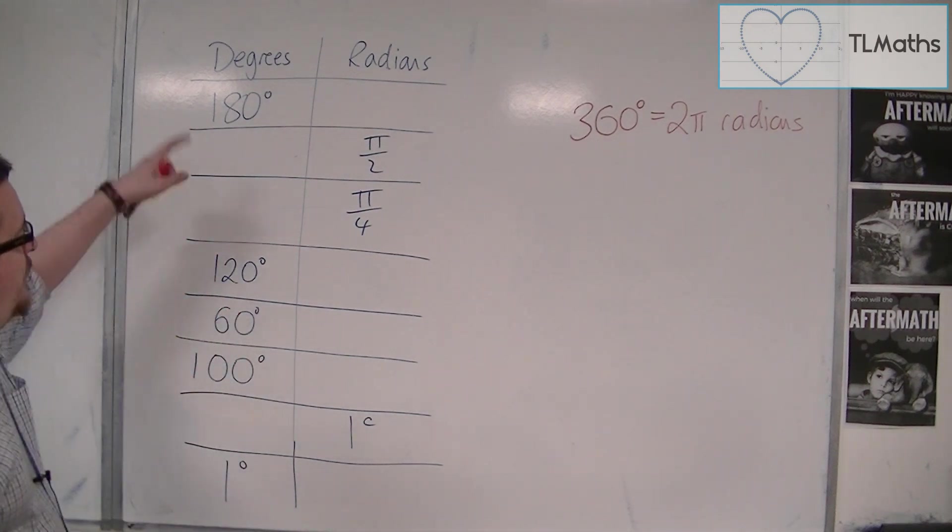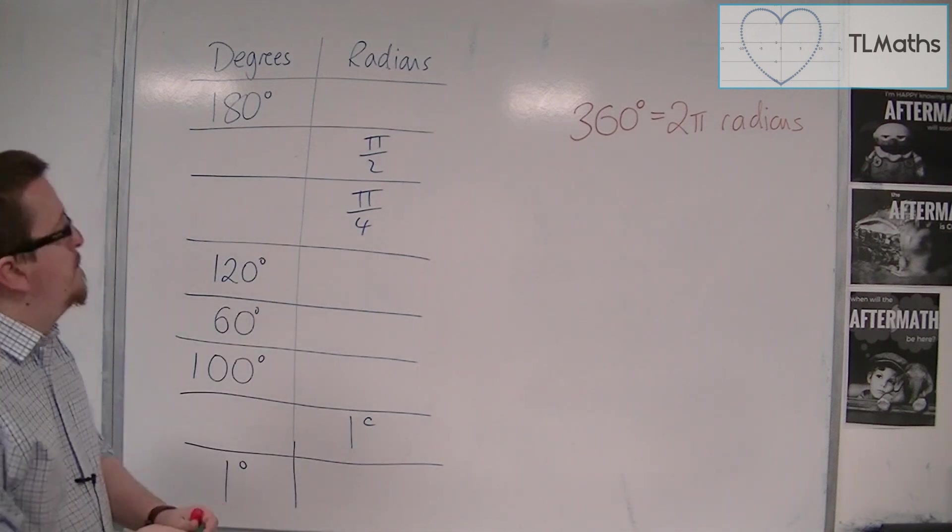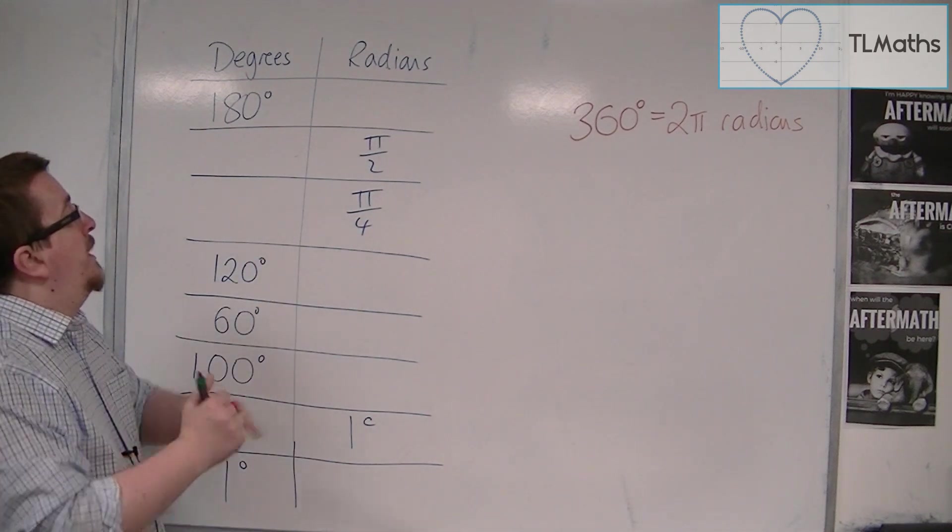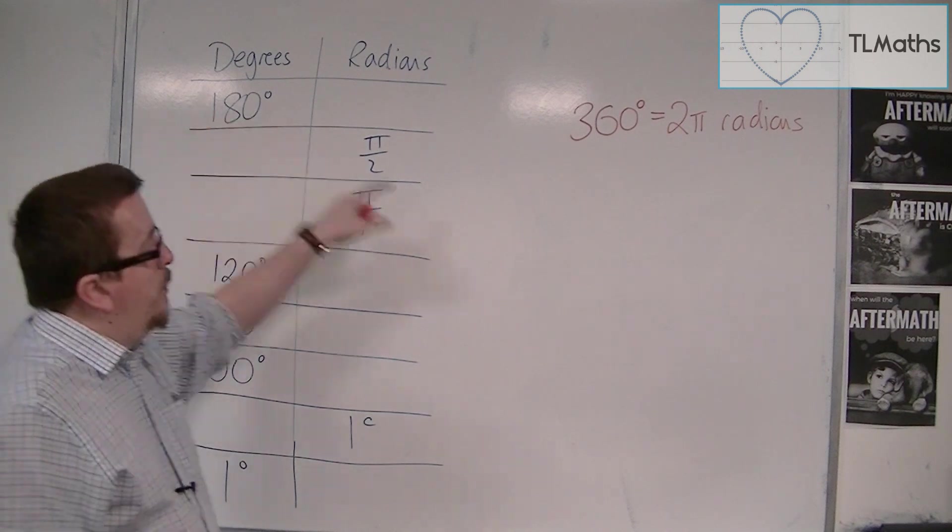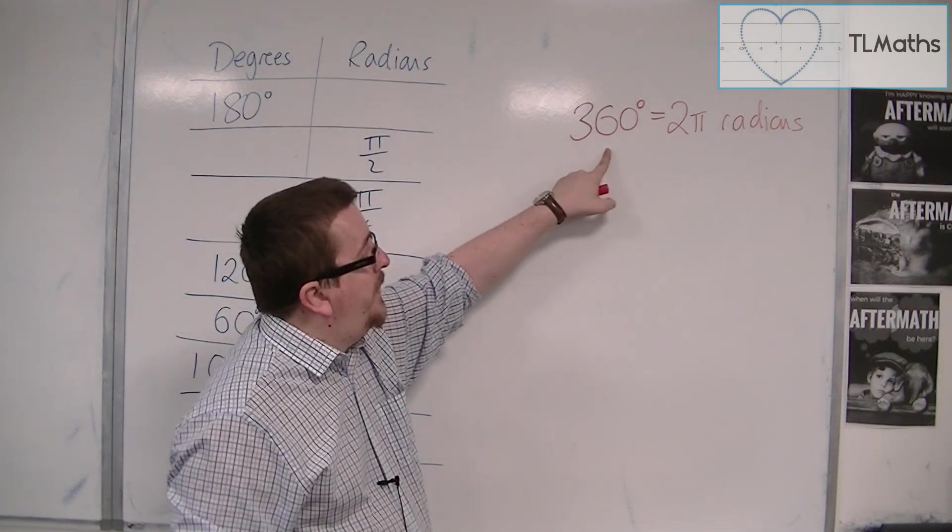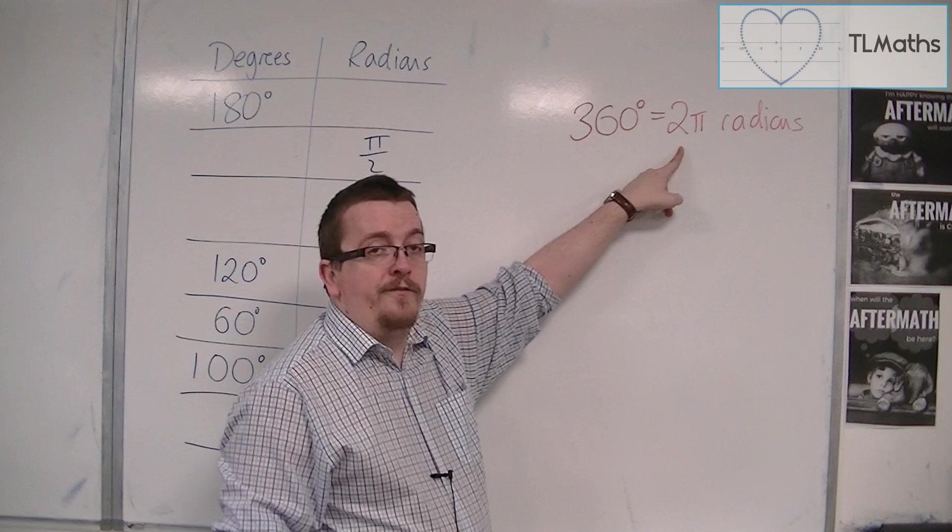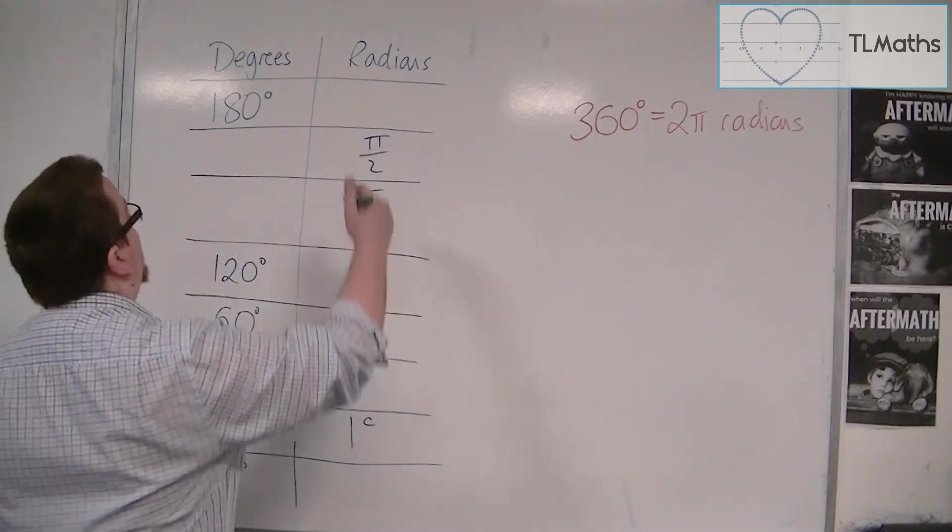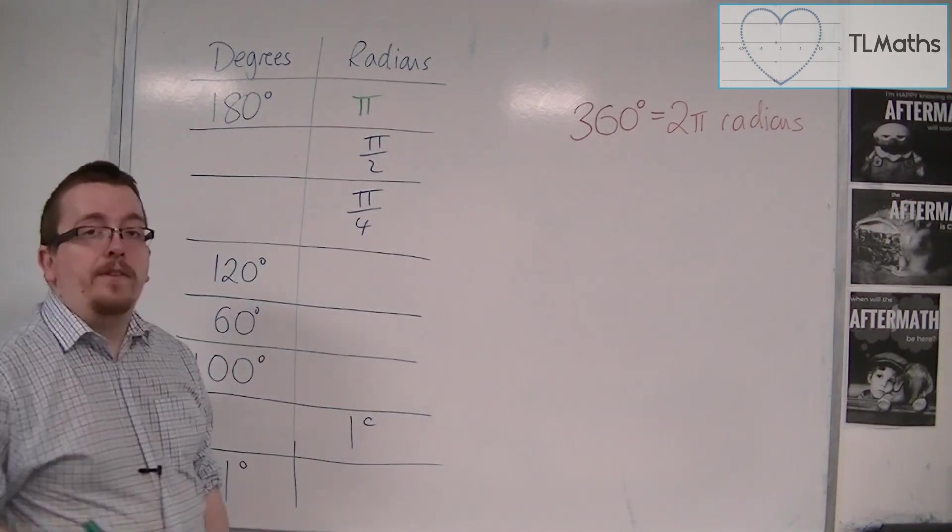As an example, we've got these gaps to fill in. So, if I'm looking for 180 degrees, I know that that's half of 360, and so it would be half of the 2 pi. So, 180 degrees is pi radians.